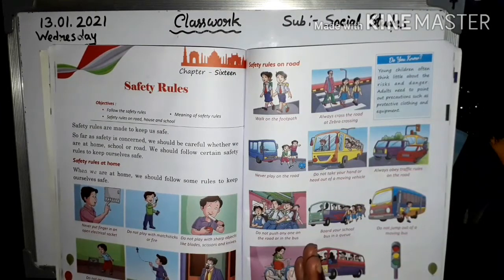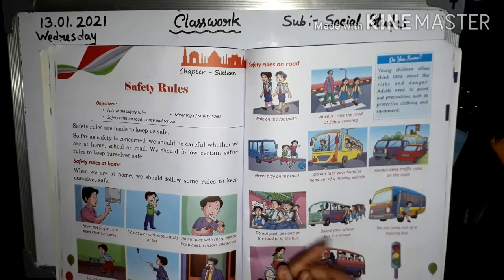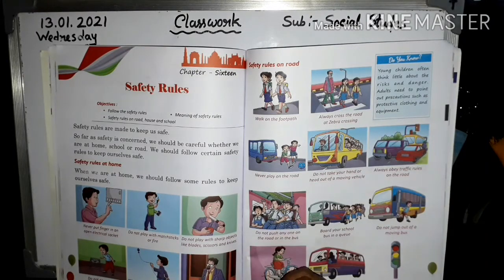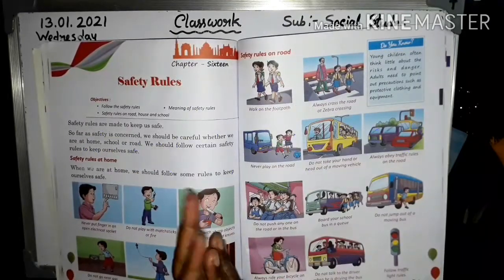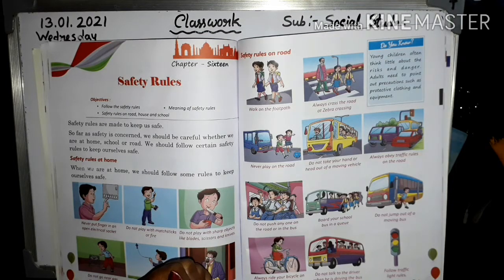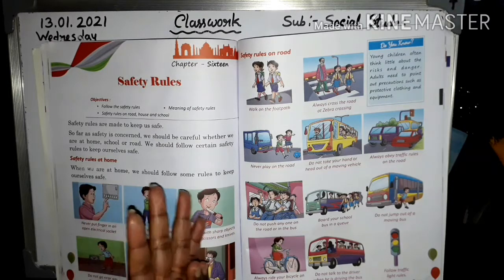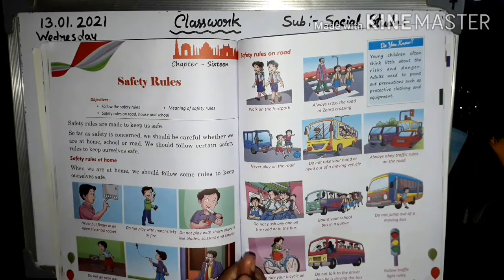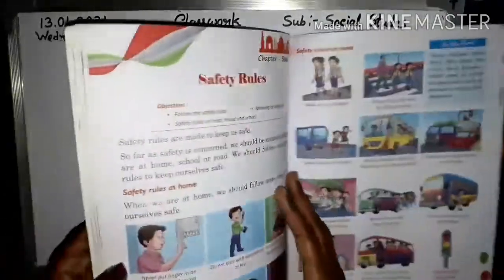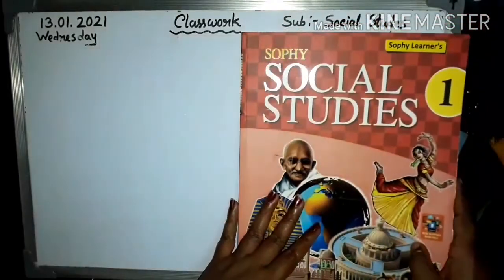Safety rules on road: Walk on the footpath. Always cross the road at zebra crossing. Never play on the road. Do not take your hand or head out of a moving vehicle. Always obey traffic rules. Do not push anyone on the road or in the bus. Board your school bus in a queue. Do not jump out of a moving bus. Always ride your bicycle on the left side of the road. Do not talk to the driver when he is driving the bus. Follow traffic light rules. Children, practice page 74-75 — this is very important.